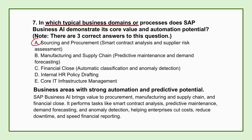On the operational side — manufacturing and supply chain — the focus is on predictive capabilities: predictive maintenance for critical machinery to anticipate failures before they happen, and vastly superior demand forecasting using more variables than humans can typically track. The net result is less unplanned downtime on the factory floor and much better inventory optimization across the supply chain, both of which directly impact the bottom line by reducing costs and improving service levels.